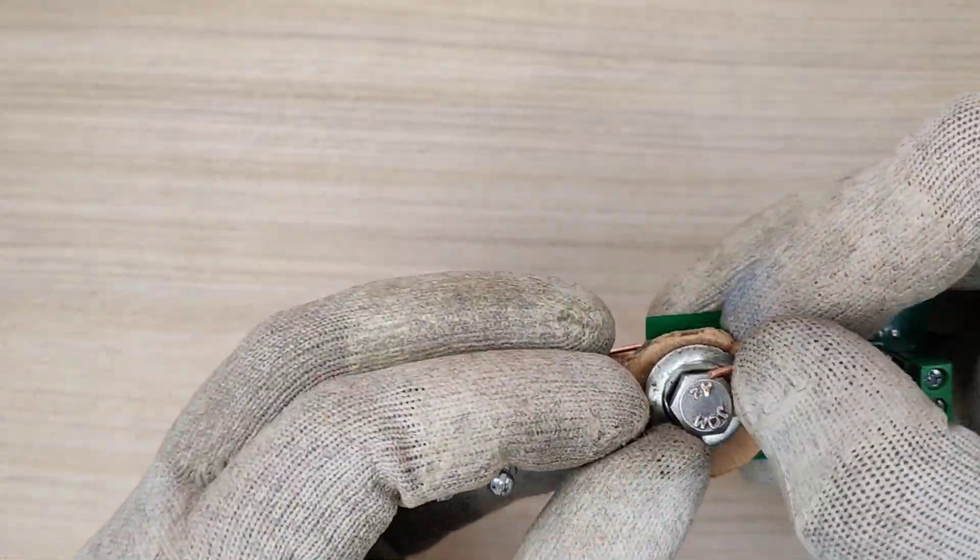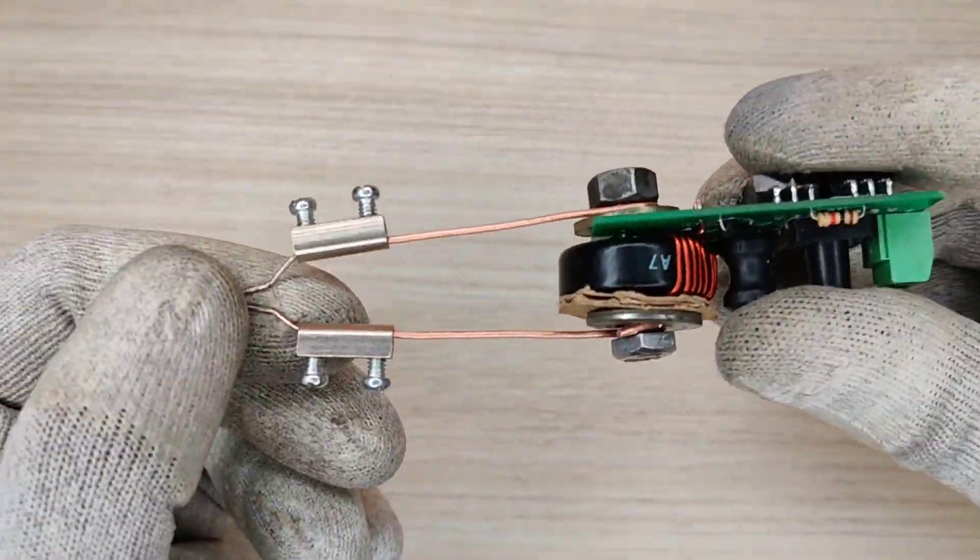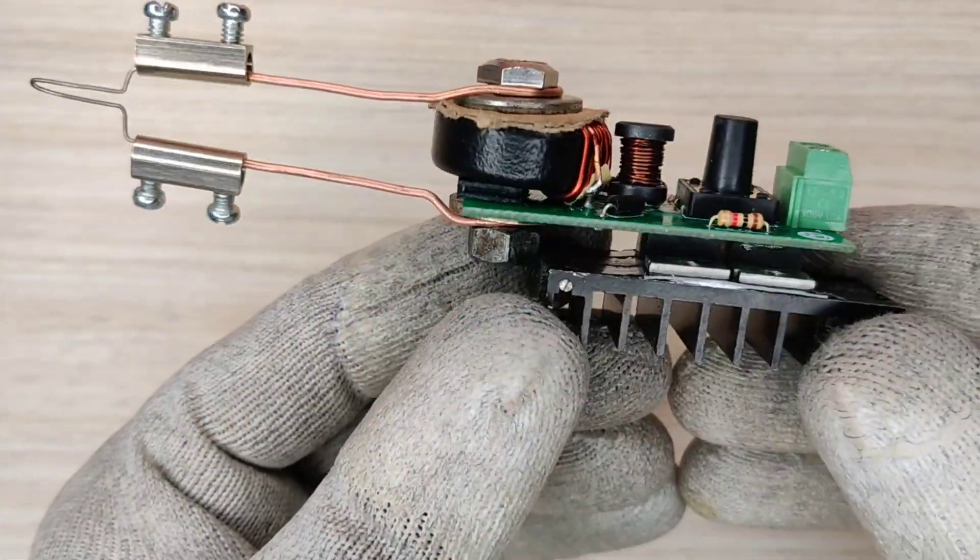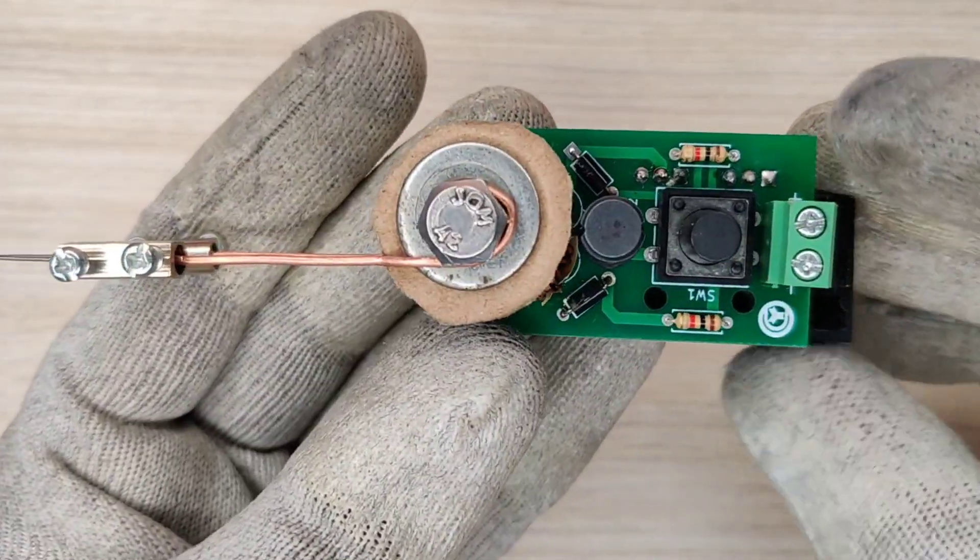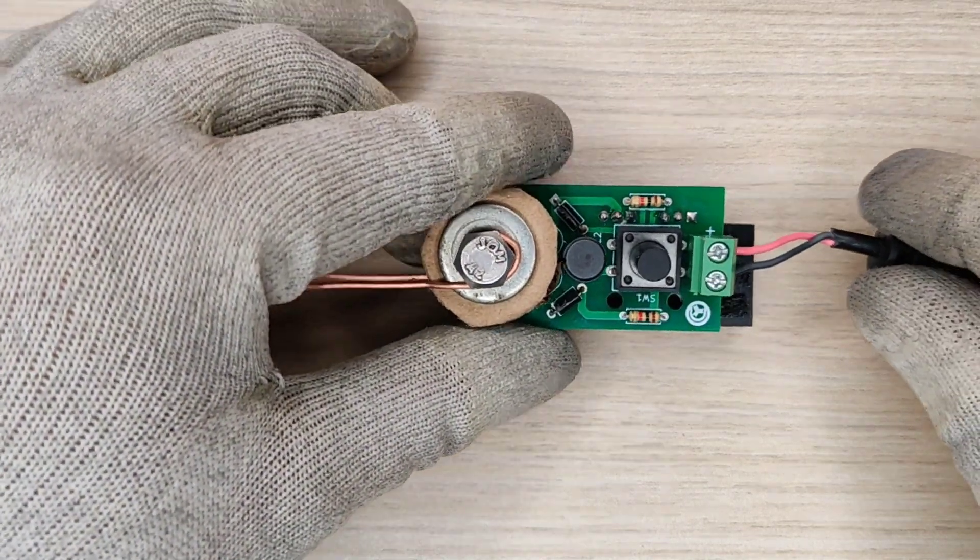Now finally our induction soldering iron is ready. Also I installed a small heat sink on the MOSFETs for heat dissipation. Connect 12-volt DC input wires.